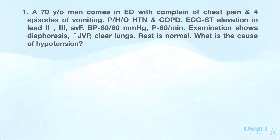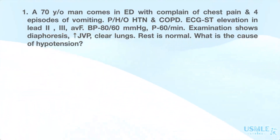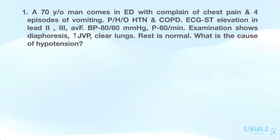What is the cause of hypotension? As you can see from this case, the patient's ECG shows ST elevation in leads 2, 3, and AVF, which are the inferior leads. So the patient is having an inferior wall MI.